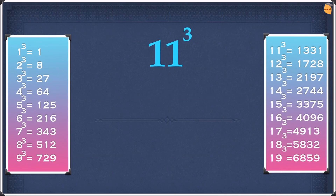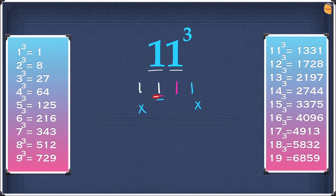Let's get started with this example which is 11 cubed. Firstly we are going to repeat the same number, so write the two ones down. Then we are going to square the second digit, which is going to be 1. Then cube the second digit, which is also going to be 1. Now leave the first and the last digit and double the second digit, which is going to be 2, and double the third digit, which is also going to be 2.